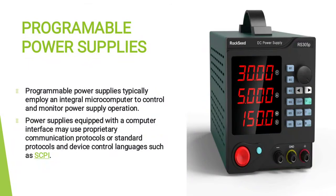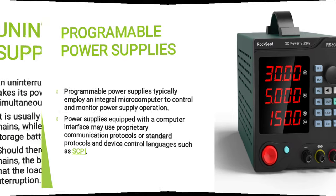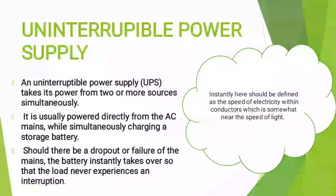An uninterruptible power supply takes its power from two or more sources simultaneously. It is usually powered directly from the AC mains while simultaneously charging a storage battery. Should there be a dropout or failure of the mains, the battery instantly takes over so that the load never experiences an interruption.